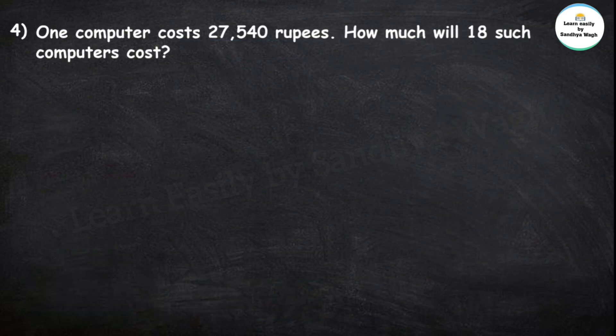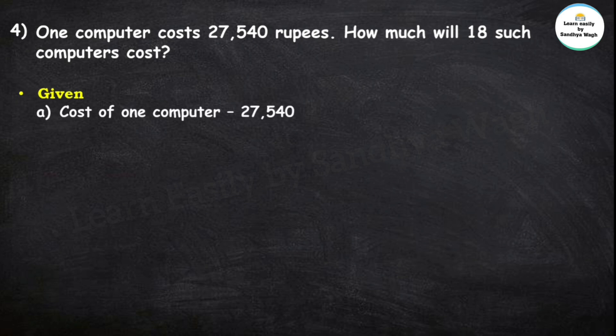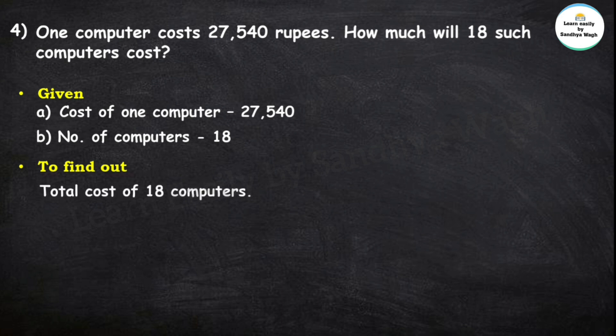Next question. One computer costs 27,540 rupees. How much will 18 such computers cost? The given information is: cost of one computer is 27,540 rupees, number of computers is 18. We need to find out the total cost of 18 computers. For that we will do multiplication.